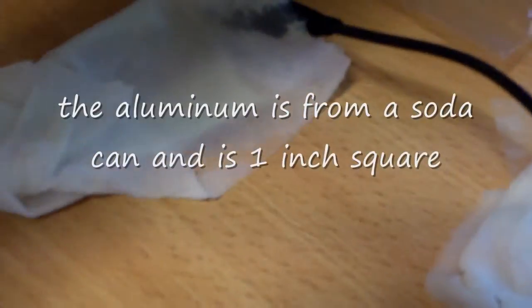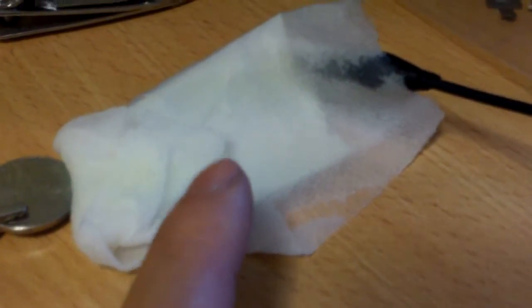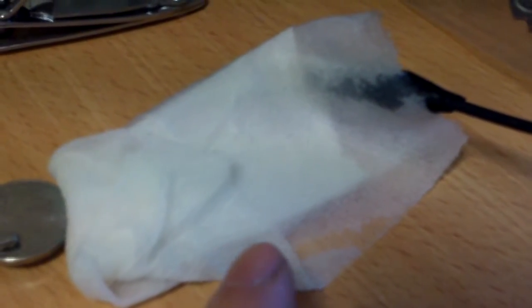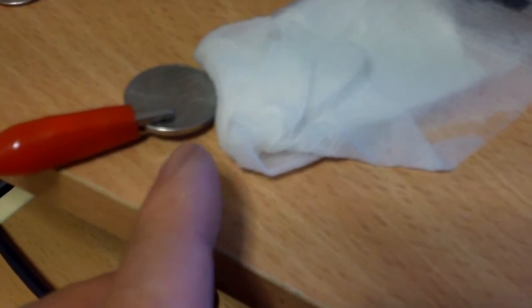Basically what I have here is I just cut a small piece of aluminum and I wrap it in a paper towel, and then I just drop some vinegar on it and then I put a nickel right on top of it or right next to it.